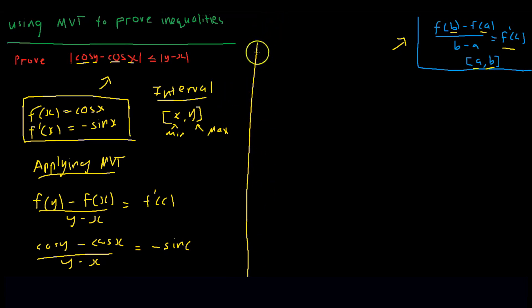Looking back at the question, we notice that there are absolute value signs around cos of y minus cos of x and y minus x. Hence, we want to take absolute values of both sides. We get that the absolute value of cos y minus cos x over the absolute value of y minus x is equal to absolute value of sin of c. As the absolute just removes the negative sign.